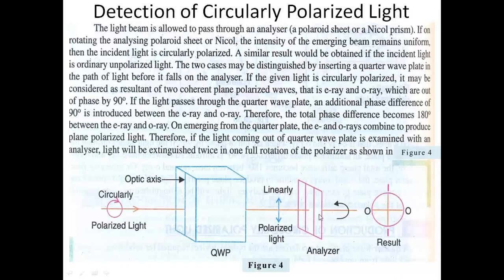When this plane polarized light is passed through the analyzer — a Nicol prism — the intensity reaches a maximum at some orientation and goes to zero in the perpendicular direction, confirming the incident light is circularly polarized. However, if unpolarized light is passed through the quarter wave plate and analyzed in the same way, the intensity remains constant at different angles of rotation. This proves the incident light is circularly polarized light. In the next class, we will see how these lights can be analyzed further.